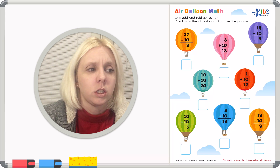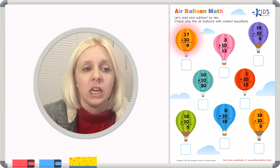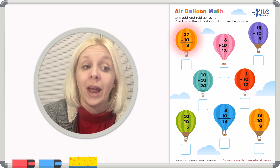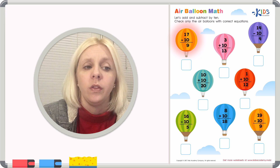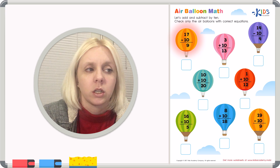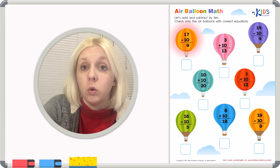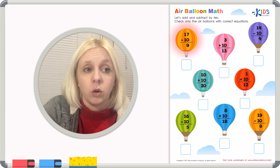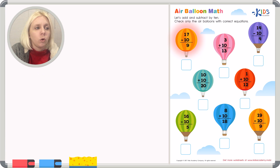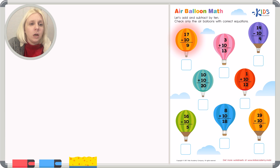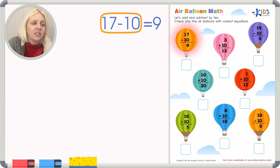Let's look at the first balloon. It says 17 minus 10 equals 9. If that is the correct answer — if the equation up here equals the number down here — we're going to put a check next to it. But we have to check to make sure it's correct. I'm going to come over to the side and show you a few different ways to do this problem. You can decide which way works best or is easiest for you.